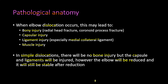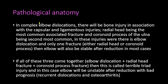In complex elbow dislocations there is bone injury in association with capsular and ligamentous injuries. The radial head is the most common associated fracture, and the coronoid process of the ulna is the second most common bony injury. In cases where there is dislocation with only one fracture — either a radial head or a coronoid process fracture — the elbow will also be stable after reduction in most cases.